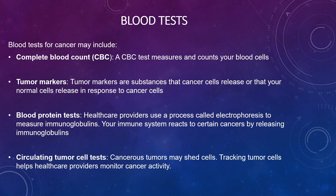Looking at blood tests for cancers: these include a complete blood count (CBC), which measures and balances your blood cells; tumour markers, which are substances that cancer cells or normal cells release in response to cancer; blood protein tests, where healthcare providers use a process called electrophoresis to measure globulins (the immune system reacts to certain cancers by altering globulins); and circulating tumour cell tests, where tracking tumour cells shed from cancerous tumours helps monitor cancer activity.